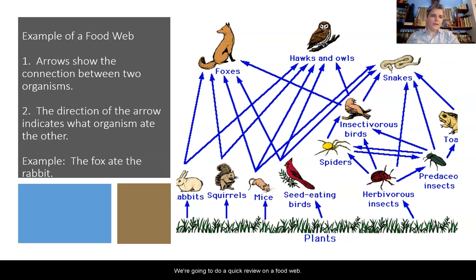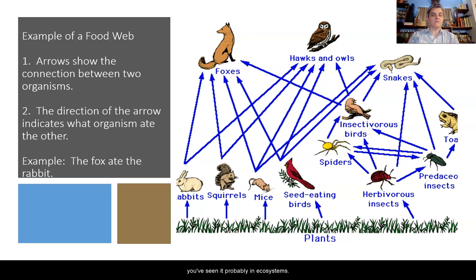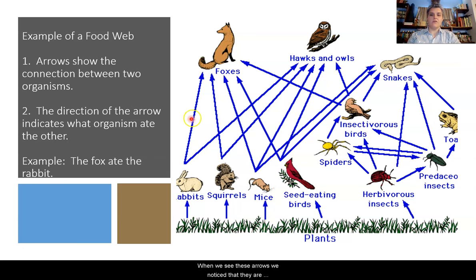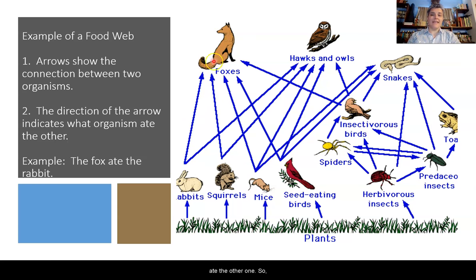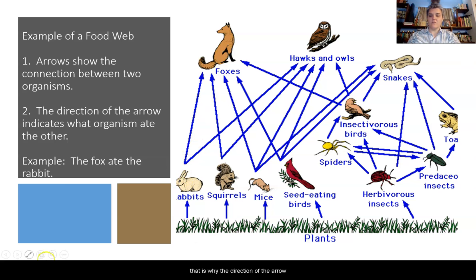We're going to do a quick review on a food web. You've seen these before in middle school science and in ecosystems. When we see these arrows, we notice that they are connecting between two organisms. The direction of the arrow indicates that one organism ate the other one. So in this particular case, the fox ate the rabbit, so the calories in the rabbit go into the fox — that is why the arrow goes in that particular direction.